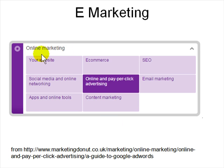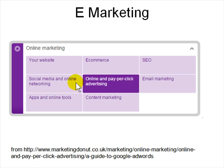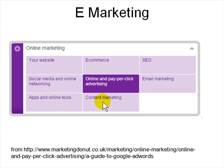E-marketing and online marketing involve several components: a website, e-commerce, SEO (search engine optimization), social media such as Facebook, LinkedIn, or Twitter, online pay-per-click advertising where you pay every time someone clicks an ad, email marketing where you send emails to large numbers of people, apps and online tools, and content marketing where you try to market your content online.